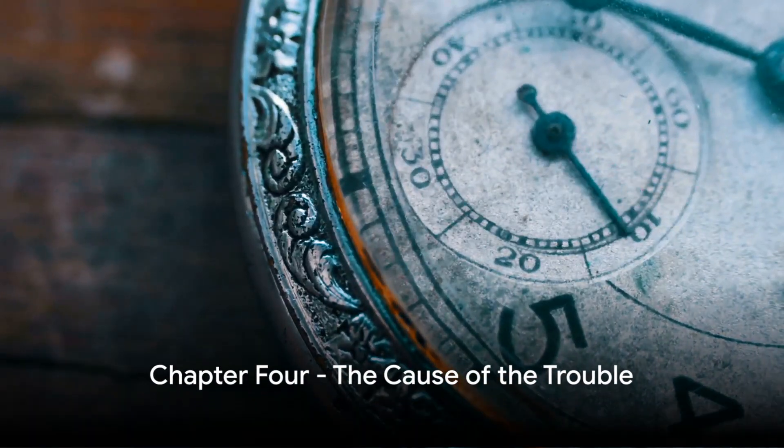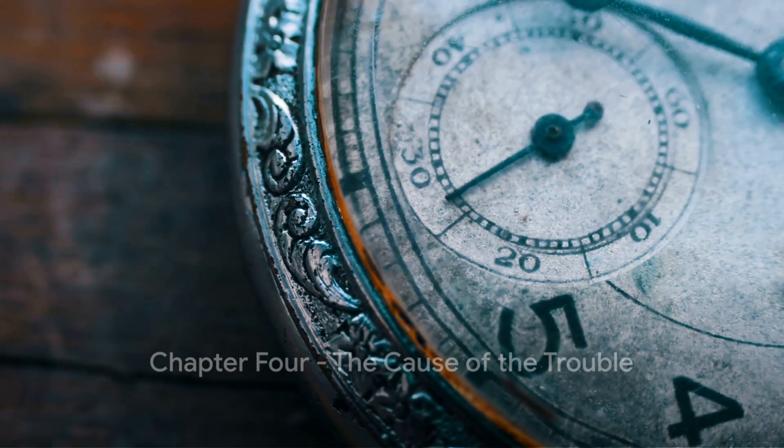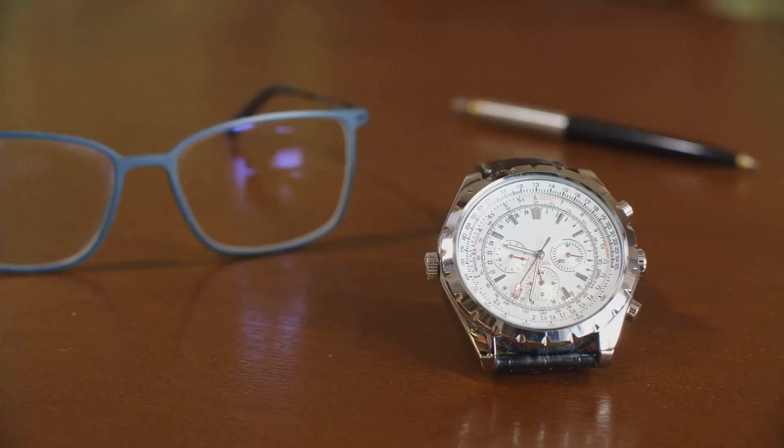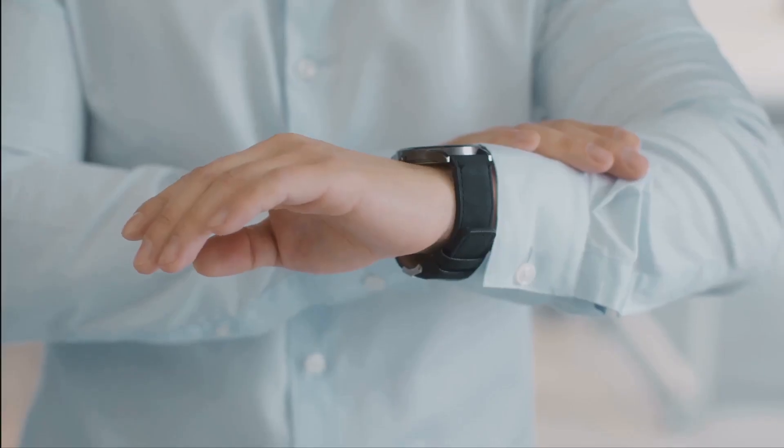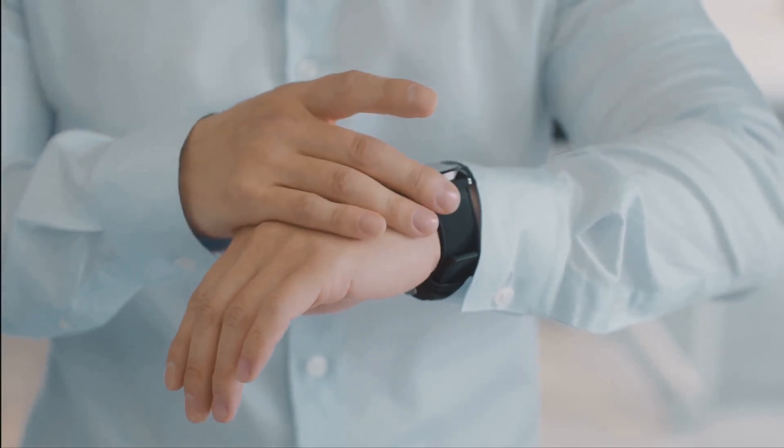In The Cause of the Trouble, the fourth chapter, Bennett identifies the root of our time management issues. He argues that we often waste time because we don't value it enough. By recognizing the true worth of our time, we can start to use it more wisely.